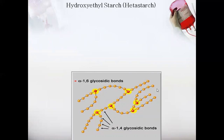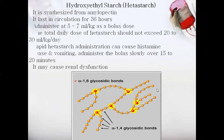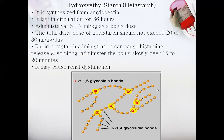Hydroxyethyl starch, also termed hetastarch, is one of the leading plasma volume expanders today. It is synthesized from amylopectin and lasts in the circulation for about 36 hours, fulfilling its purpose for a longer duration. However, rapid administration can cause histamine release and vomiting, so it must be given slowly as a bolus. In some cases it can also cause renal dysfunction.